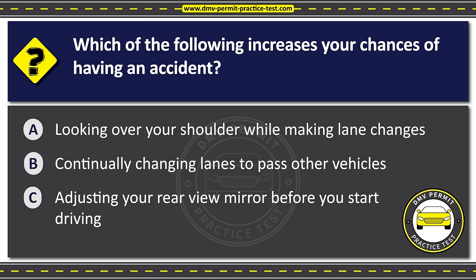Question forty-two. A white painted curb means Option A: Loading zone for freight or passengers. Option B: Loading zone for passengers or mail only. Option C: Loading zone for freight only. The correct answer is Option B: Loading zone for passengers or mail only.